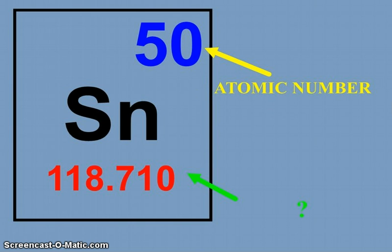The red number here, 118.710, that is not the mass number. The mass number is for an individual atom, the number of protons and neutrons in the nucleus. This 118.710 is what we're going to learn about here briefly, the atomic mass.